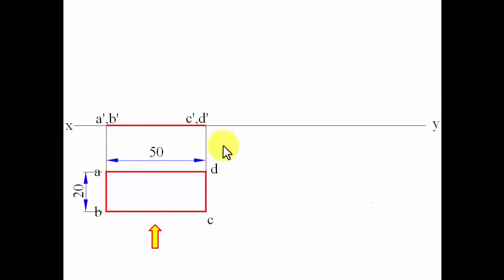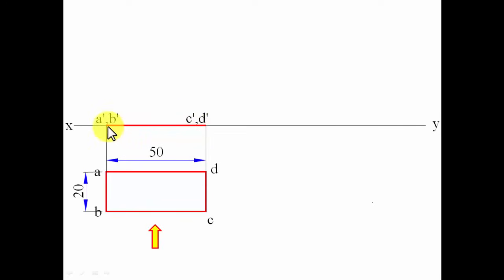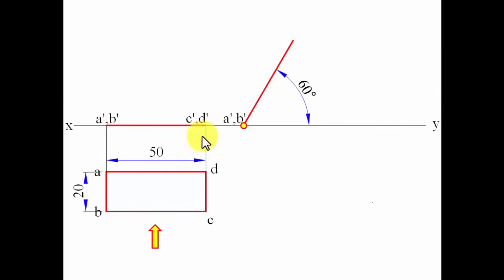In step two, we always take the surface inclination. The smaller edge is at 90 degrees to the XY line in step one, and in step three it will be inclined at 30 degrees. For step two, the surface is inclined to the HP, and any inclination with the HP can only be seen from the front. So we recreate the front view at an angle of 60 degrees — keeping point A'B' on the XY line and making a line at 60 degrees to place C'D' at the same distance.